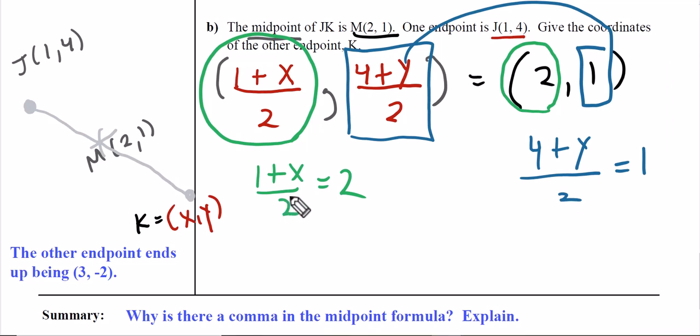Let's start with this green one. To get rid of this 2, we multiply by 2. To get x by itself, I subtract 1 from both sides, and I get x = 3.